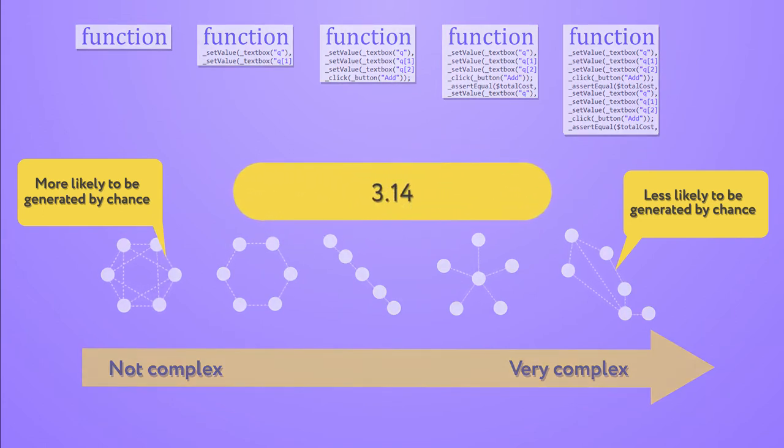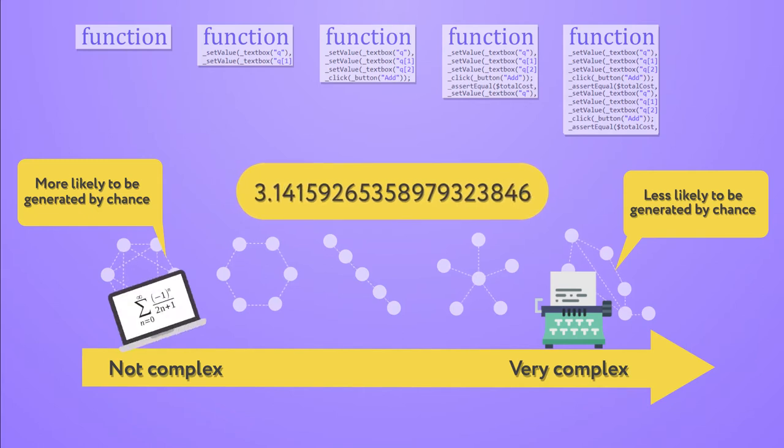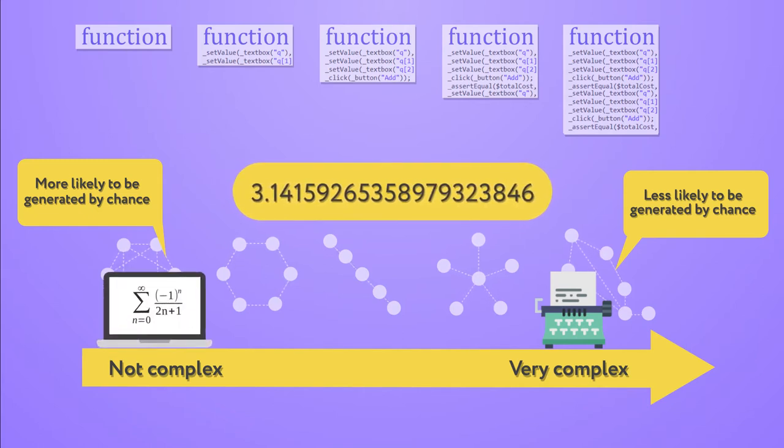For example, consider the mathematical constant pi. If you wanted to produce the first 1,000 digits of pi, the chances to do so by typing them at random are very low. But the chances to produce not the digits, but a formula that produces any number of digits of pi are much higher because pi has many short formulas that generate its digits.